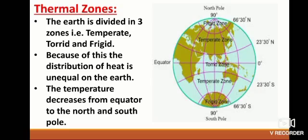Thermal zones. The earth is divided in three zones: temperate, torrid and frigid. Because of this, the distribution of heat is unequal on the earth. The temperature decreases from equator to the north and south.